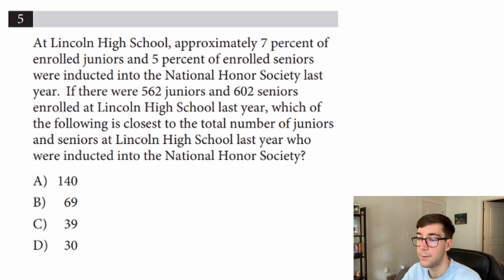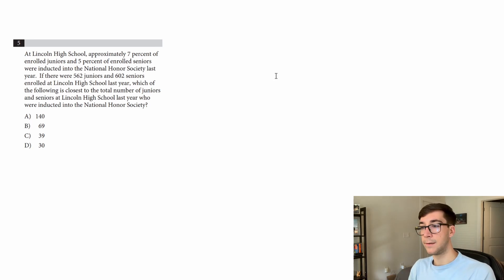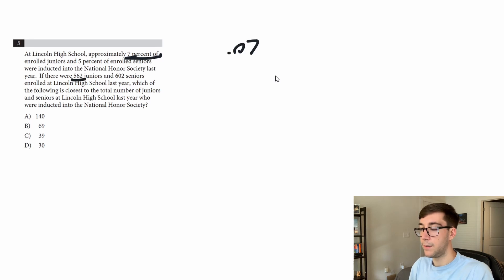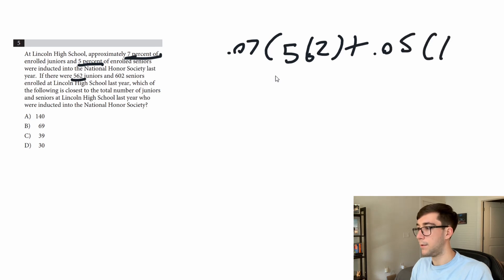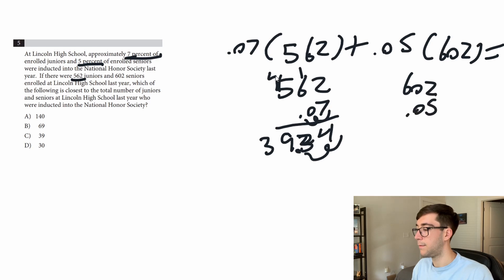Continuing: if there were 562 juniors and 602 seniors enrolled last year, which of the following is closest to the total number of juniors and seniors inducted into the National Honor Society? Here we're not solving equations, just doing calculations. Seven percent of the juniors: 0.07 times 562, plus five percent of the seniors: 0.05 times 602, equals our answer.